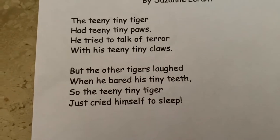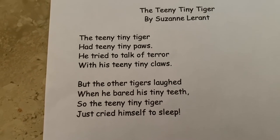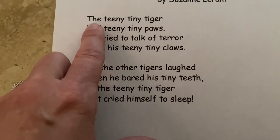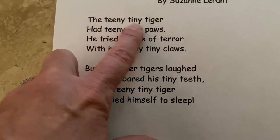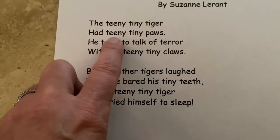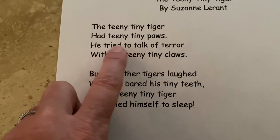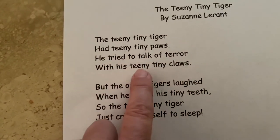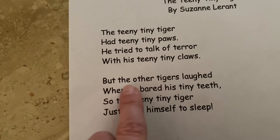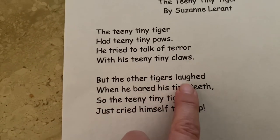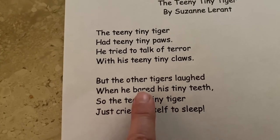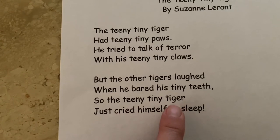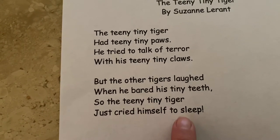So the teeny tiny tiger just cried himself to sleep — he wanted to be a bigger tiger than he was. Let's read the poem again. We have lots of T's in this poem. Let's try. Ready? The teeny tiny tiger had teeny tiny paws. He tried to talk of terror with his teeny tiny claws. But the other tigers laughed when he bared his tiny teeth. So the teeny tiny tiger just cried himself to sleep.